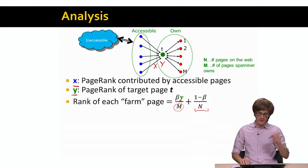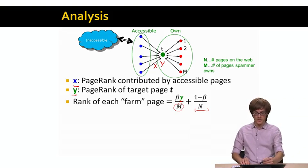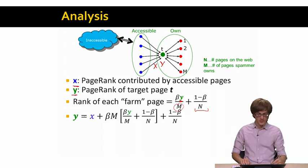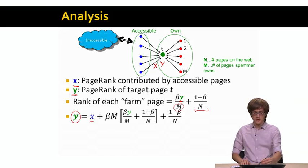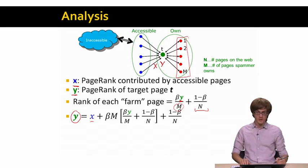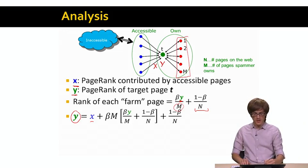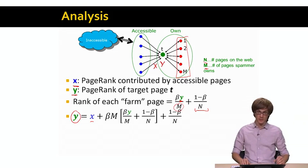So now, given that we now know what is the score of every web page that we own, this is denoted as red nodes, let's also compute what is the value of y. So the value of y, y is the page rank score of node T, is simply x, which is the amount of page rank contributed by the accessible pages, plus beta times M. And now the contribution of page rank scores from the pages that we own. So this is beta times y divided by M plus 1 minus beta over N plus 1 minus beta divided by N. Where M now is the number of pages that the spammer owns, and N is the number of pages that are total on the web.